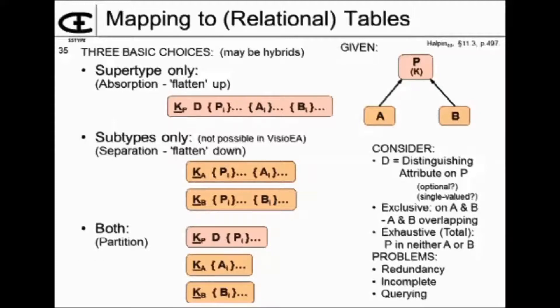The three possibilities are you can absorb or flatten up. See how the notions we talked about flattening up and flattening down in the context of a hierarchical structure, we're using exactly the same thing here. So we can absorb or flatten up, that means that all the attributes in all of the subtypes will be stored together in a table with the supertype. That's one possibility. And so in this, we've got the key of the supertype KP, we've got D that's the distinguishing characteristic. So there would be some characteristic or you can think of it as kind of a code or something that would be in the supertype telling you what the subtype is.